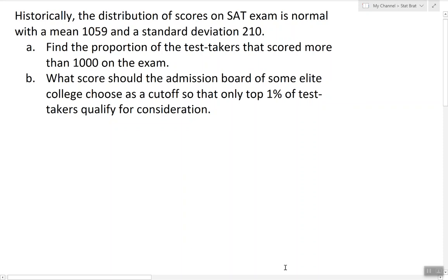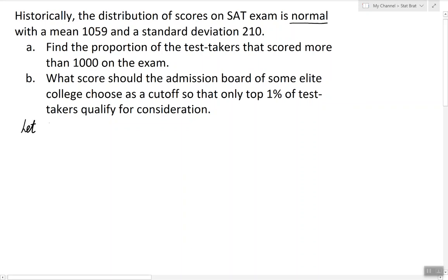First, let's read the problem. Here we have the distribution of scores of the SAT exam is given to be normal with a given mean and given standard deviation. The first thing we have to do is introduce a random variable. So let's introduce X, and let X be the SAT score of a randomly selected person.